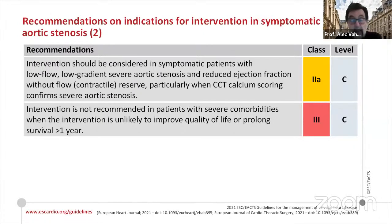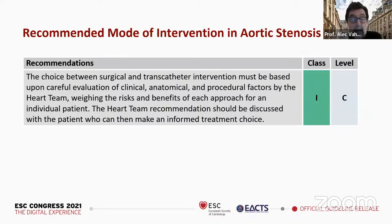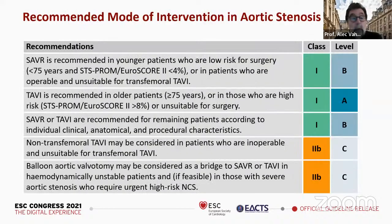Intervention is not recommended and should not be performed in patients with too many comorbidities where intervention is unlikely to prolong or improve quality of life. The most important recommendation for choosing between surgery and transcatheter intervention is that this choice must be based on careful evaluation of clinical, anatomical, and procedural factors by the heart team, weighing risks and benefits for the given patient. Importantly added in the new guidelines: the heart team recommendation should be discussed with the patient, who then takes an informed decision.